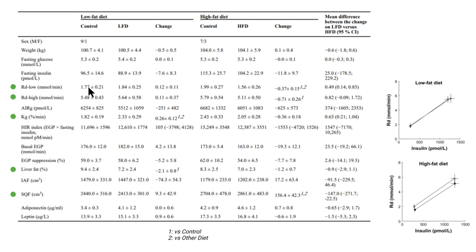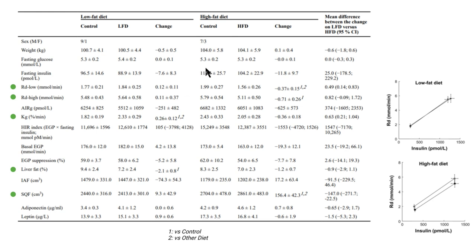On the other hand, looking at the high fat diet, we do see a difference — there's a "1" marker, so the decrease from 1.99 to 1.56 is large enough to be statistically significant versus the control. Beyond that, there's also a "2" marker, which represents a comparison against the other diet — the low fat diet. So there's a statistically significant difference both within treatments and between treatments for the high fat diet on RD low glucose disposal.